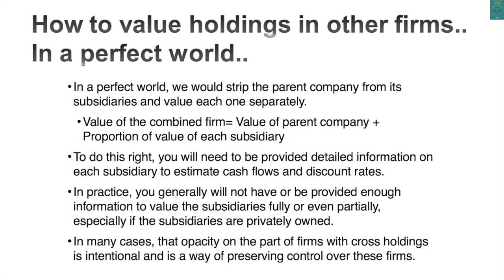Now you see why it's so difficult to value cross-holdings. The first step is figuring out how the accountants have dealt with them. In a perfect world, here's how I'd value cross-holdings: I'd value the parent company standing alone, then value each cross-holding separately — I don't care whether you own five percent, ten percent, or sixty-five percent — and take the percentage of each subsidiary that belongs to you. The advantage is I can assign different characteristics to each company: different cost of capital, different growth rates, different risk profiles.